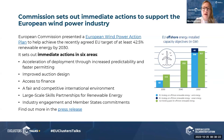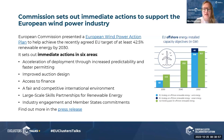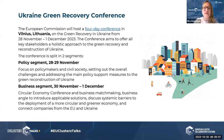Yesterday the Commission set out new immediate actions to support the European wind power industry. The new European Wind Power Action Plan was presented to help achieve the EU target of at least 42.5% renewable energy by 2030. It outlines six immediate action areas: accelerating deployment through increased predictability and faster permitting, improved auction design, access to finance, fair and competitive innovation, international environment, large-scale skills partnership, and industry engagement and member state commitments.